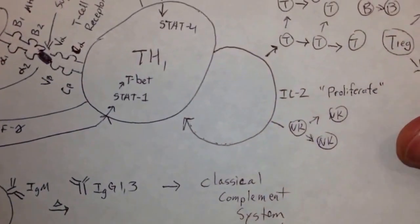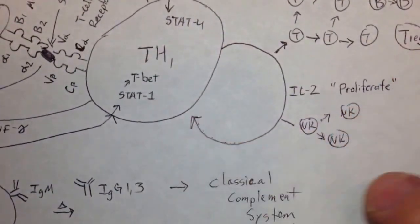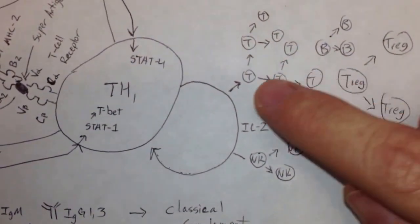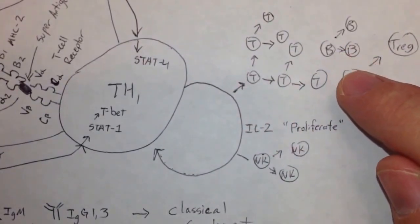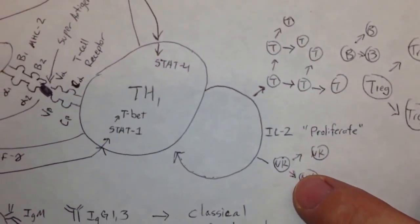The T helper cell also likes to secrete interleukin-2, which it will pick up itself, and this is a proliferation signal. So you can see here T cells are proliferating, B cells are proliferating, T regulatory cells are proliferating, and NK cells are proliferating.